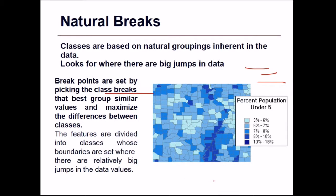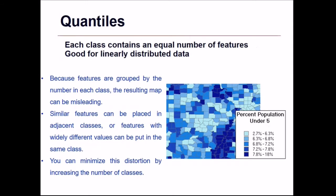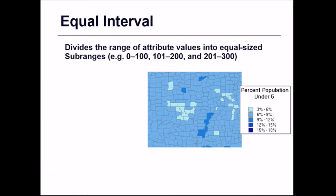The features are divided into classes whose boundaries are set where there are relatively big jumps in the data values. For quantiles, each class contains an equal number of features, and this is good for linearly distributed data. Because features are grouped by count in each class, results may be misleading — similar features can be placed in adjacent classes, or features with very different values can be in the same class. You can minimize this distortion by increasing the number of classes.